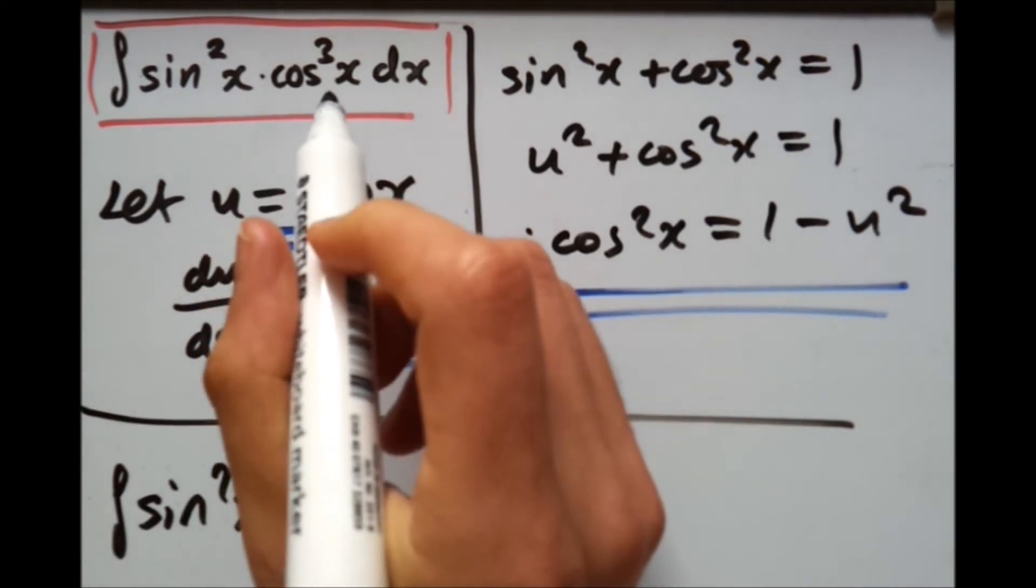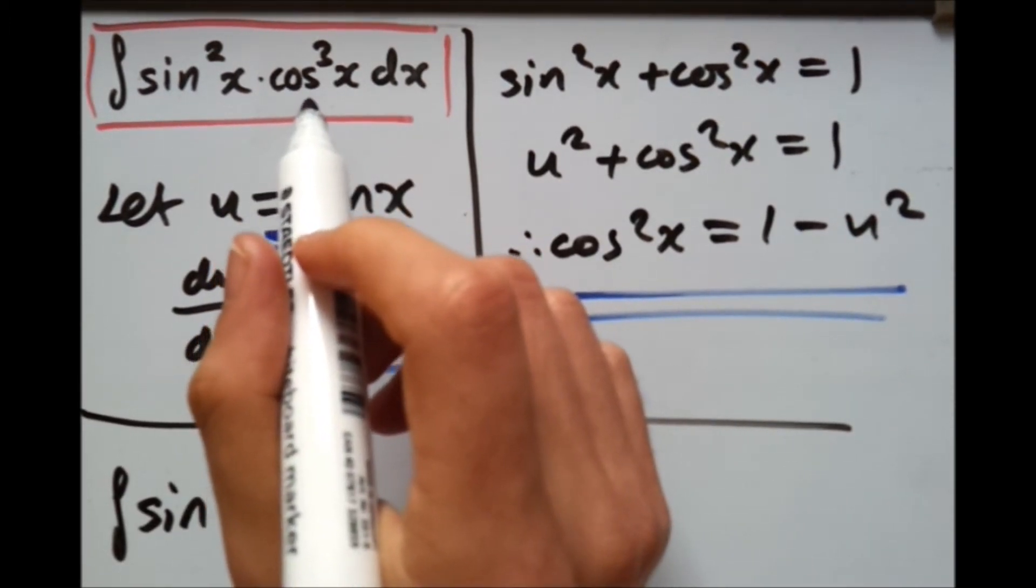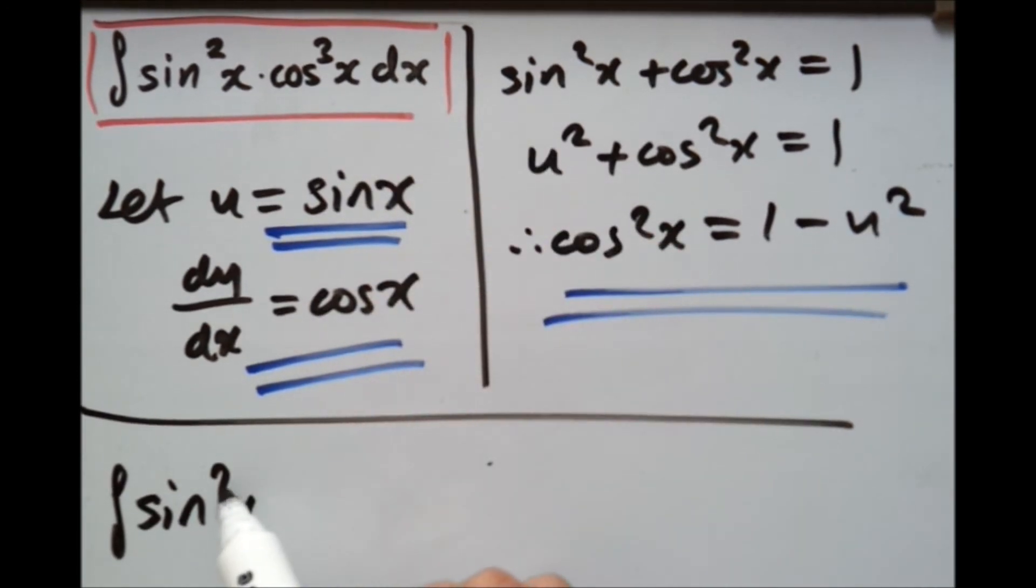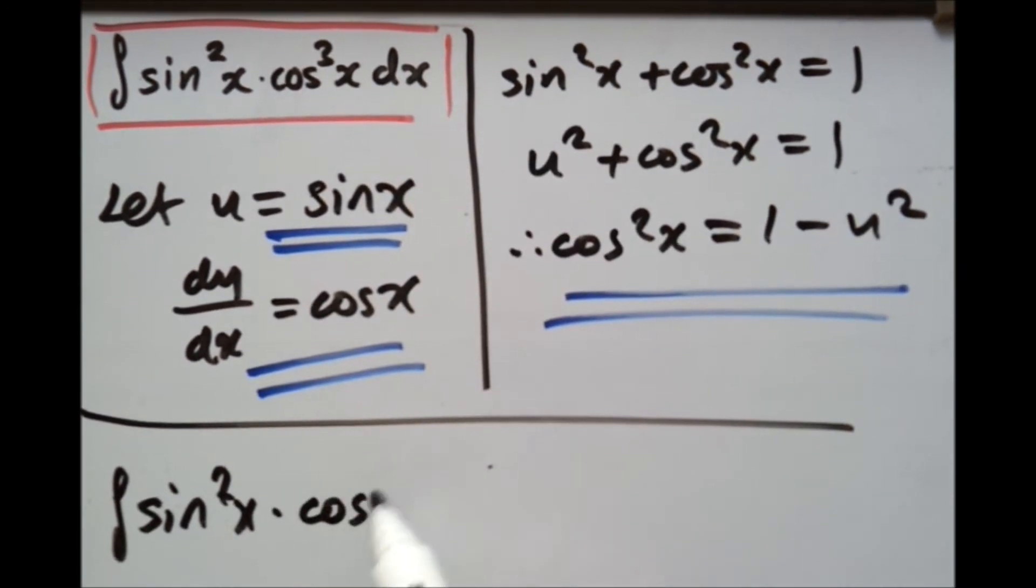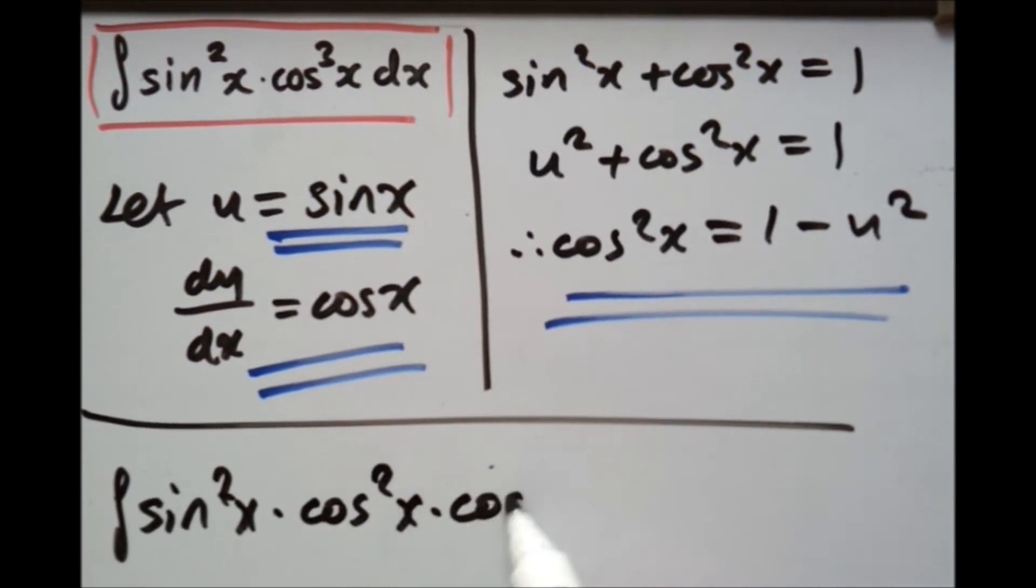Now for this case, to solve this, we kind of have to split the cos cubed into, say, cos squared and a cos x. So we should have cos squared x and cos x.